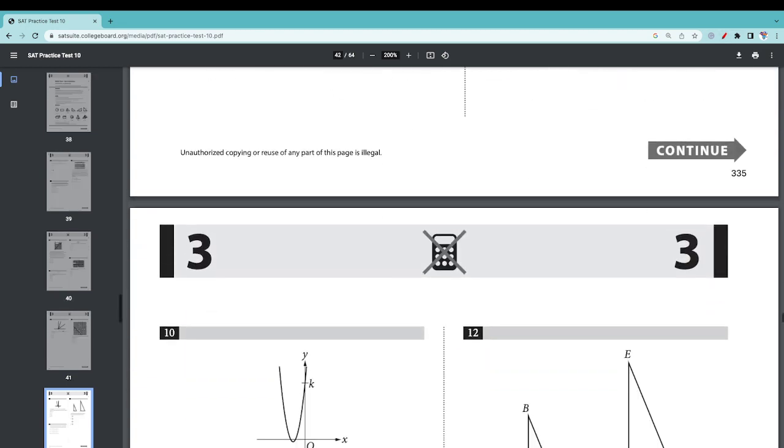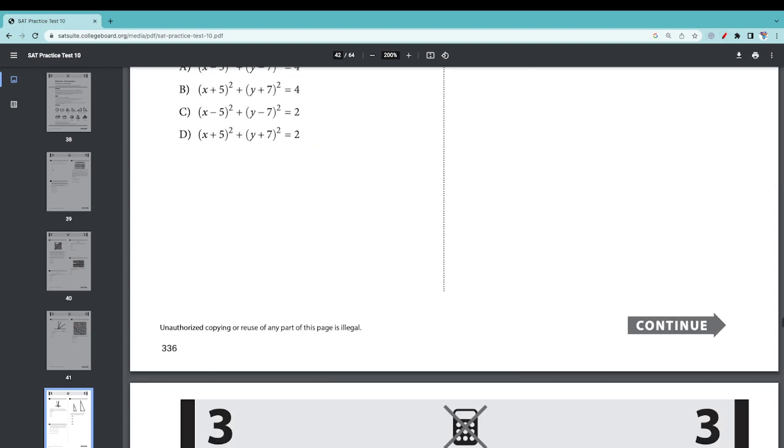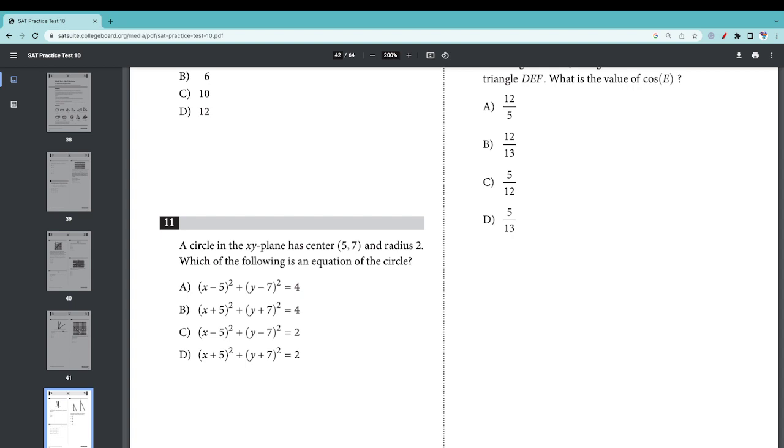Number 10: The graph of y equals 2x squared plus x plus 12 is shown. If the graph crosses the y axis at the point (0, k), what is the value of k? When x is 0, plug in 0 to this equation: this is 0, this is 0, we're just left with 12. So 10 should be D.